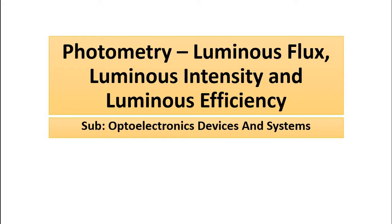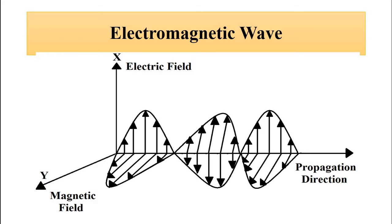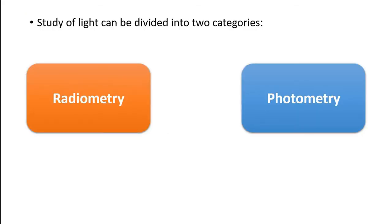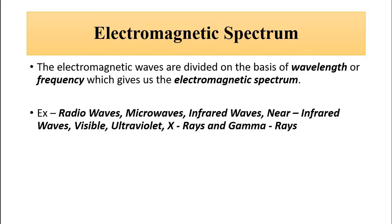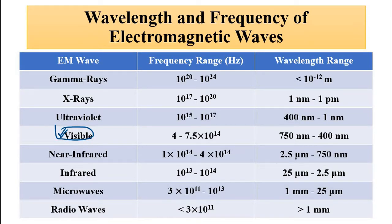Just a quick recap. We discussed that the study of light, which is basically an electromagnetic wave, it can be divided into two categories: radiometry and photometry. All of this is done on the basis of the demarcation or categorization of the different waves in the electromagnetic spectrum. Photometry is basically concerned with the visible frequency range or wavelength range of the electromagnetic spectrum — this wavelength 400 to 750 nanometers.